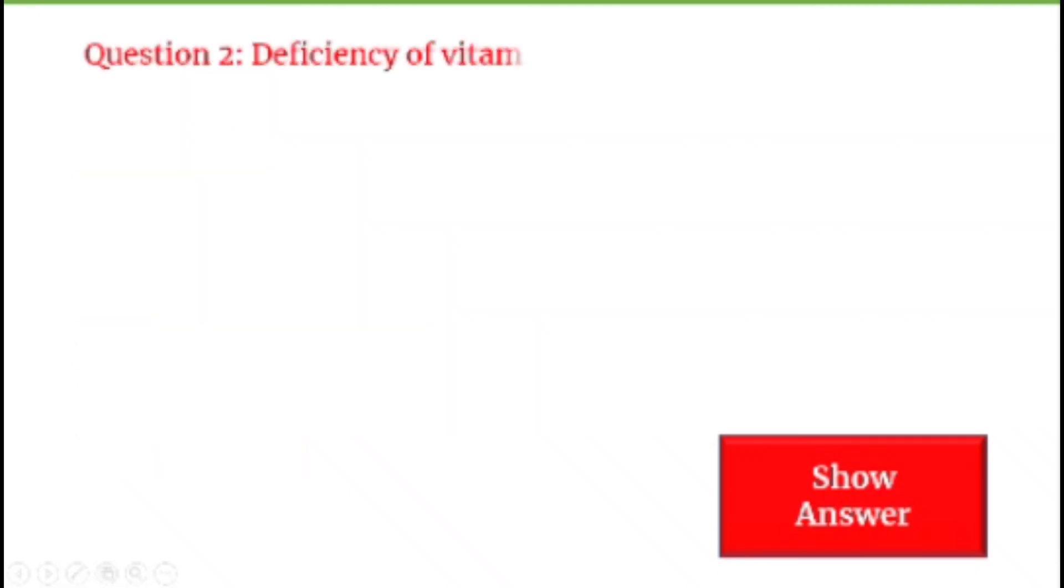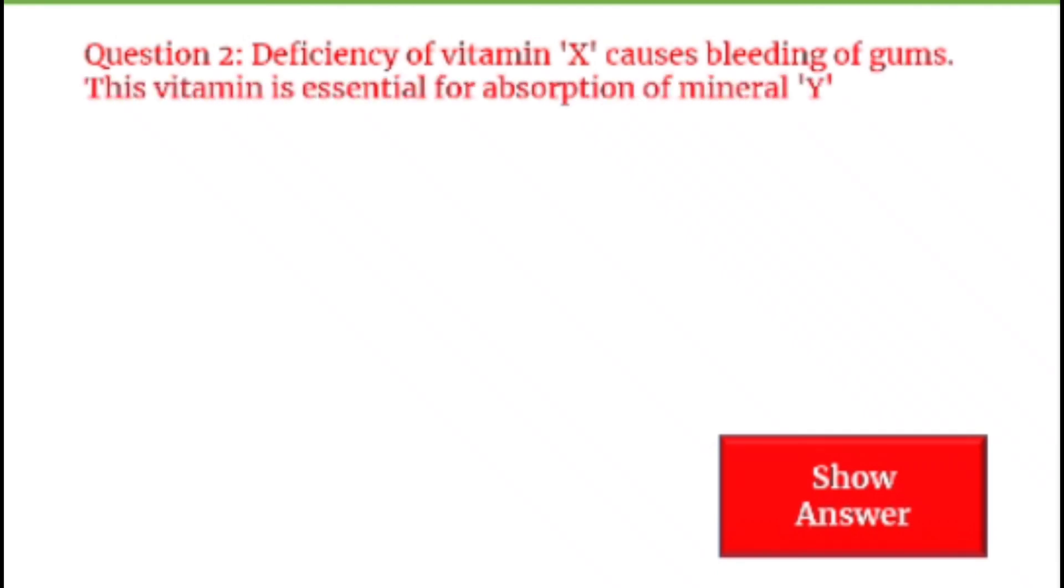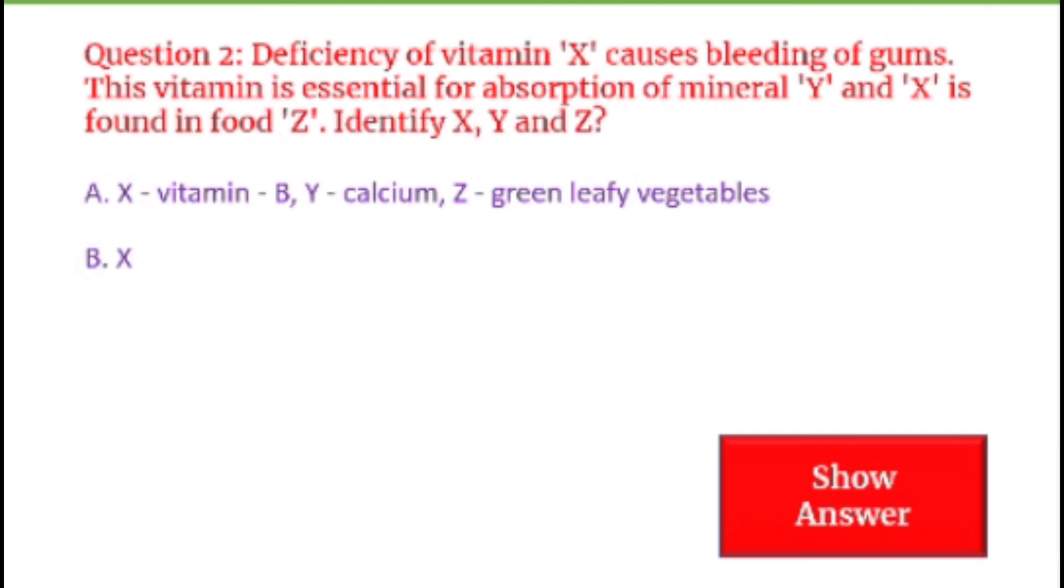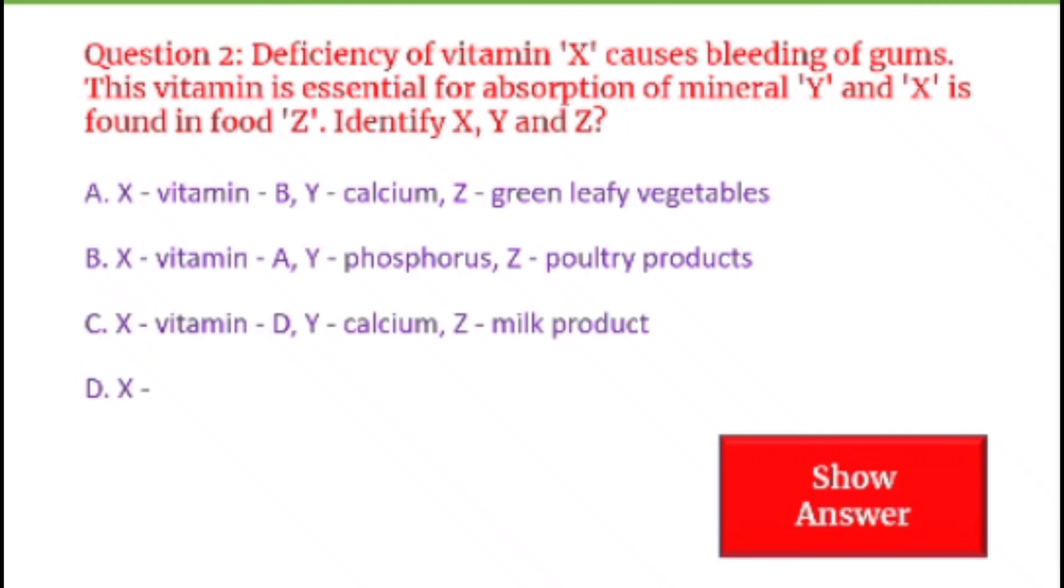Next question on your screen. Deficiency of vitamin X causes bleeding of gums. This vitamin is essential for absorption of mineral Y and is found in food Z. Identify X, Y, and Z. Option B: X Vitamin E, Y phosphorus, Z poultry product. Option C: X Vitamin D, Y calcium, Z milk product. Option D: X Vitamin C, Y iron, Z poultry product.